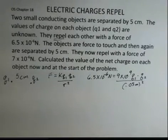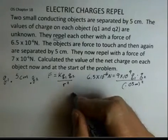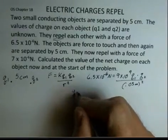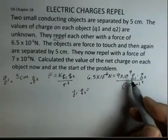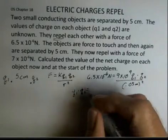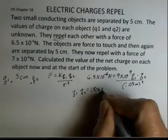If you would run that, and you should repeat all these calculations on your own, Q1 times Q2, just solving for the quantity Q1 times Q2, I came up with 1.806 times 10 to the minus 18.